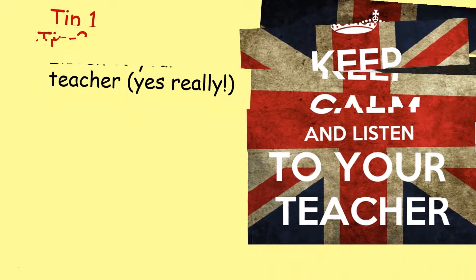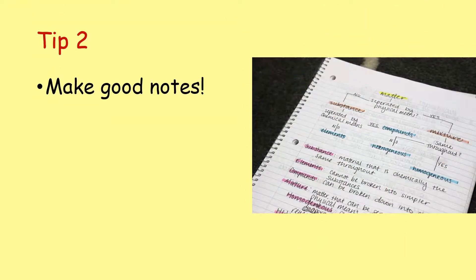Tip number two: make good notes. This doesn't mean that you need to write down everything your teacher says. You don't need to write everything that's on the board at all times, but make notes on the key points — the key pieces of vocabulary and the key facts that you need to know. Summarise it, put it in your own words. In my classes, there is a very strong correlation between the students who make good notes and the students who get good grades at the end of year 11.